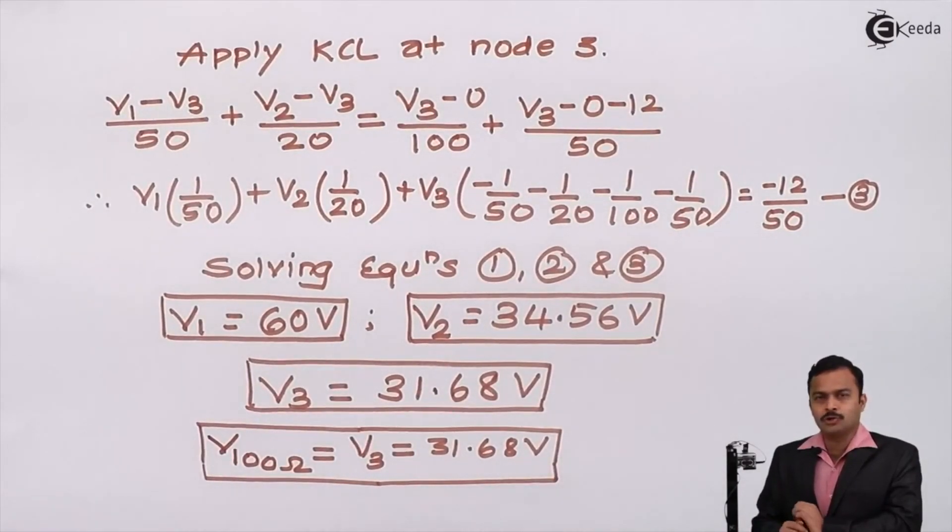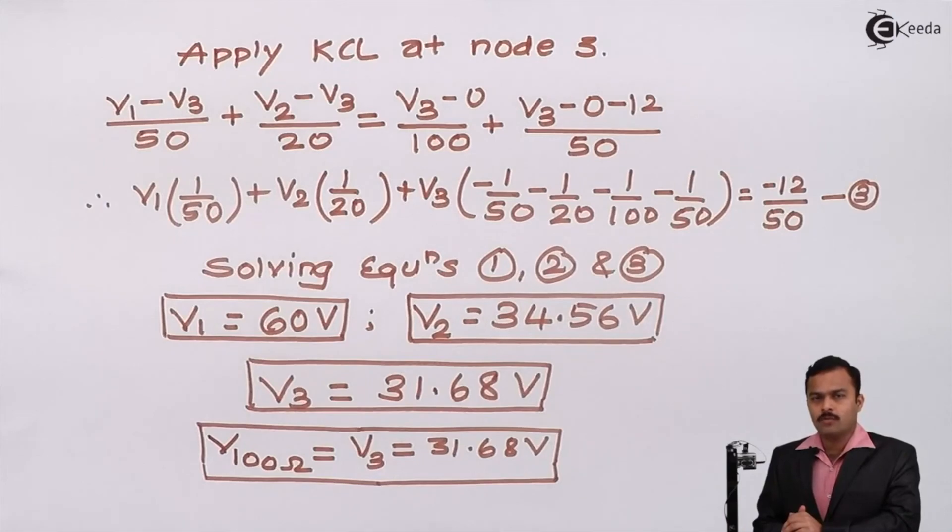So we have considered a numerical having so many voltage sources, current sources, and resistances where more than three loops are there. Mesh analysis may be a lengthy and tedious process, but by using nodal analysis the same problem can be solved very easily with less number of steps. In subsequent videos we will solve more numericals based on nodal analysis. Thank you.